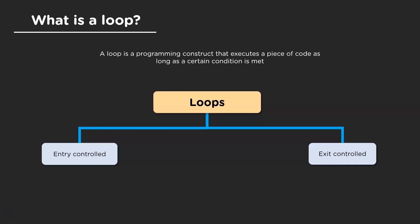When it comes to exit control loops, the test condition is checked after the loop has been executed. So in this case, the code in the loop gets executed at least once. The example for this is a do while loop. With this basic knowledge, let's go ahead and learn about the different loops.